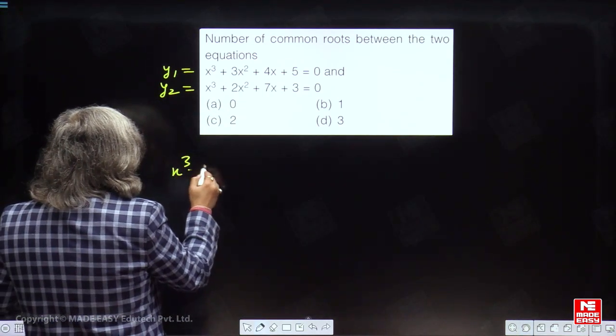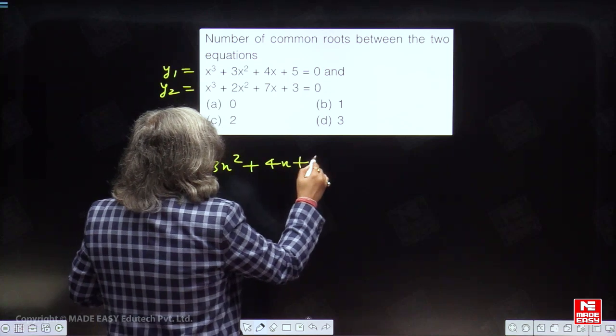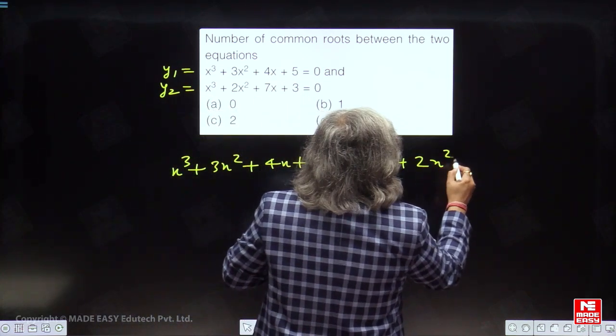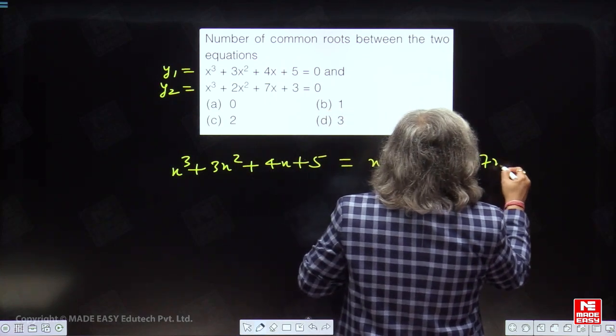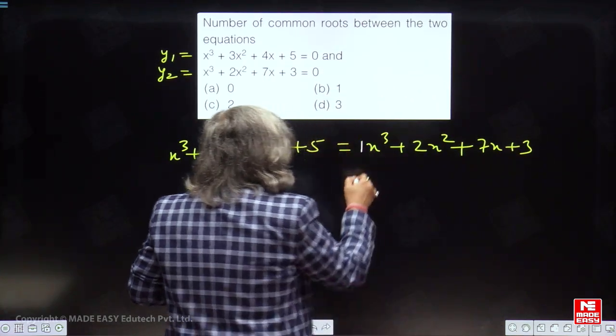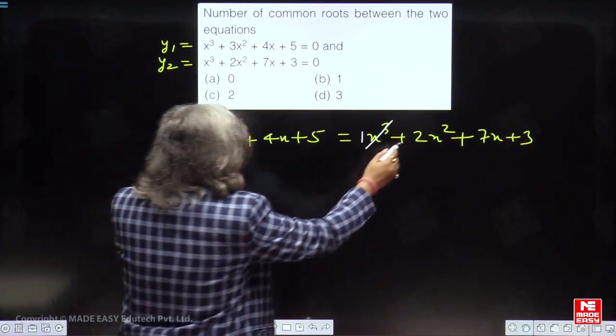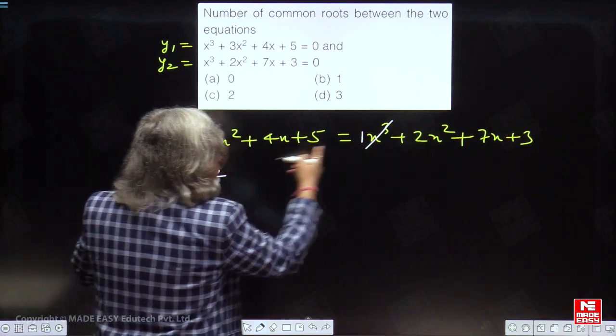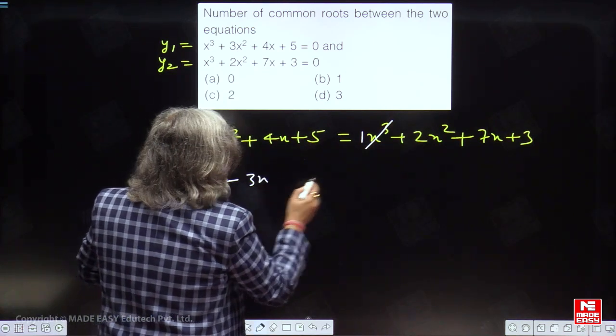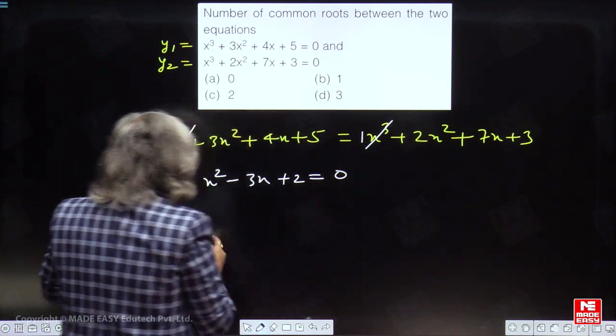If I evaluate y1 equal to y2, we have x³ + 3x² + 4x + 5 should be equal to x³ + 2x² + 7x + 3. Coefficient of x³ is unity on both ends. So, x³, x³ will eventually cancel out. We have here x², 3x² minus 2x² and here it will be minus 7x plus 4x minus 3x and plus 2 should be equal to 0.